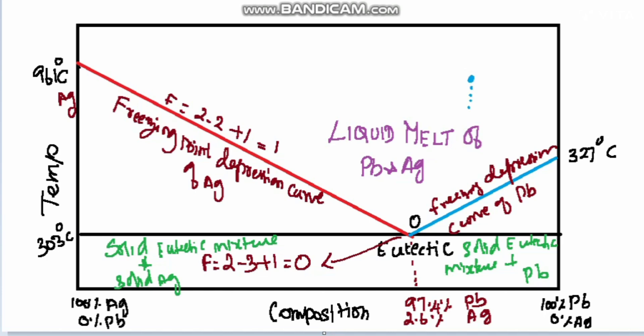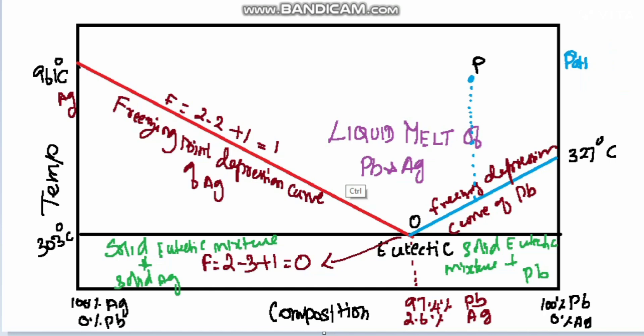Consider a point P where the silver composition is very low — less than 0.1% — which is called argentiferous lead, where the lead composition is dominant. When we cool this system, it follows the dotted line and reaches the blue color curve, at which point lead crystallizes out since lead has a lower melting point. The lead crystals can be removed, so the liquid melt will have a progressively higher percentage of silver. When it reaches point O, the silver composition will be 2.6%. This process of increasing the silver concentration from 0.1% to 2.6% is called Pattinson's process.